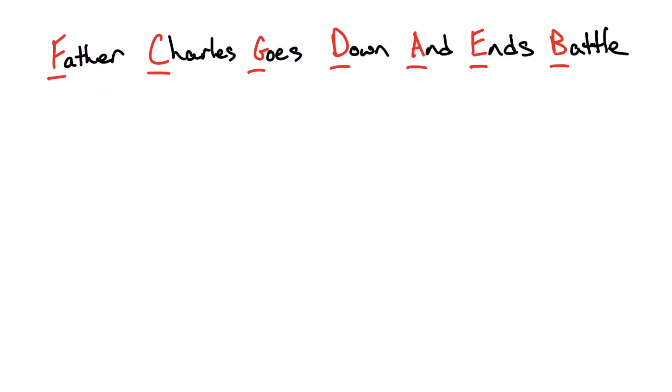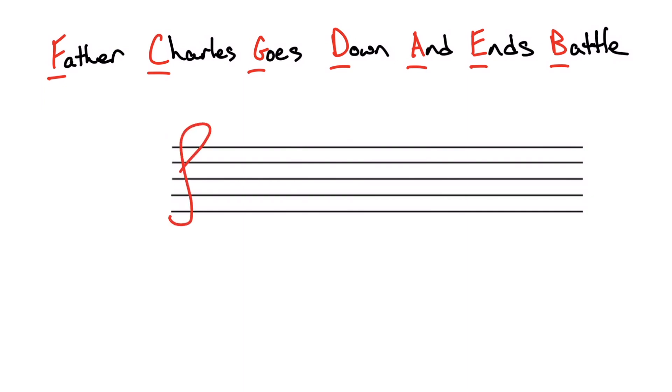So when we talk about sharps or flats, there is always a certain order that these sharps and flats are written in. So with sharp keys, a good way to remember the order is with the saying, Father Charles goes down and ends battle. And so the order of sharps is always F C G D A E B. And so whenever you see sharps written on the staff, they're always going to be in this order: F sharp, C sharp, G sharp, D sharp, A sharp, E sharp, B sharp.